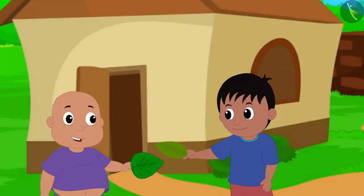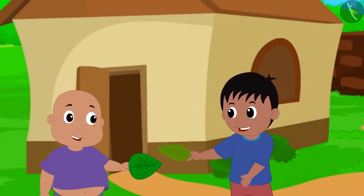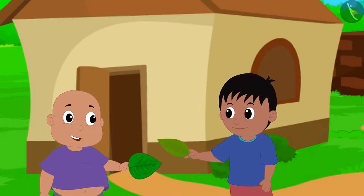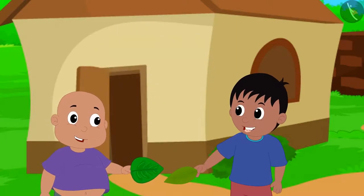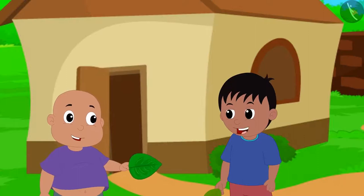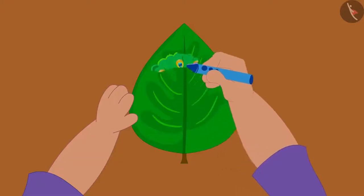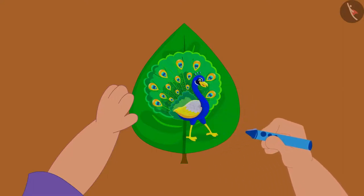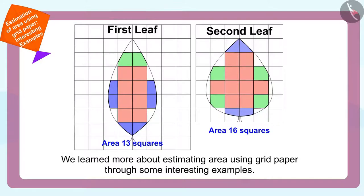Well done, Babalu. We came to know which is the biggest leaf, and you also learned to find the area using a grid paper. Now let us quickly take part in the competition by painting a beautiful picture on this bigger leaf. The two friends made a beautiful painting on the second leaf. Children, in this video we learned more about estimating area using grid paper through some interesting examples. In the next video, we will look at some of the misconceptions related to this.